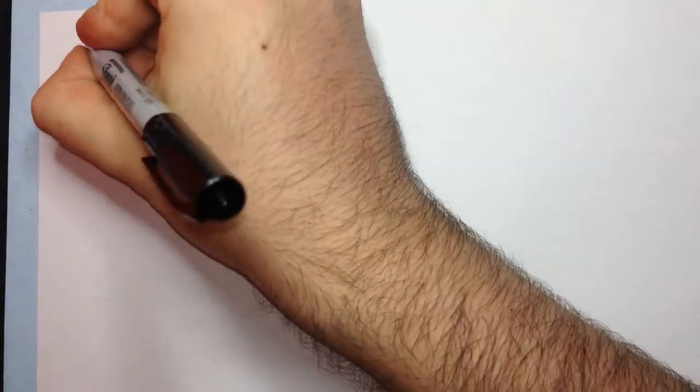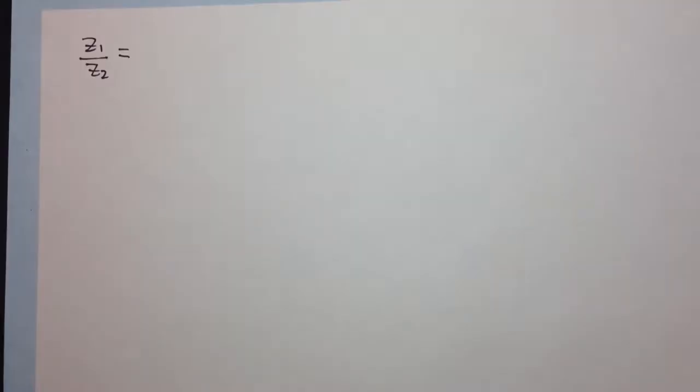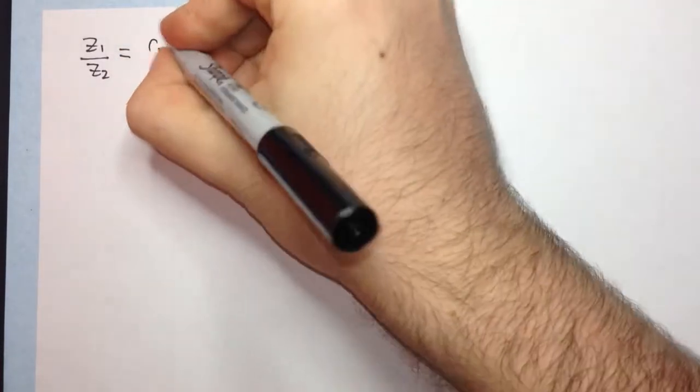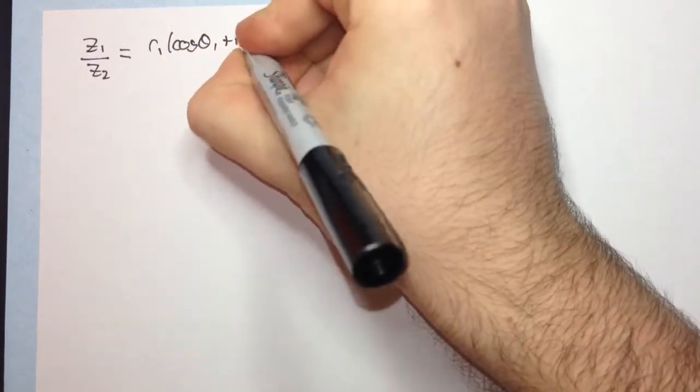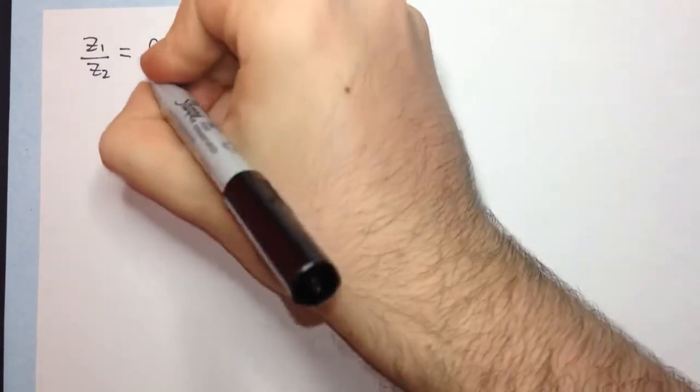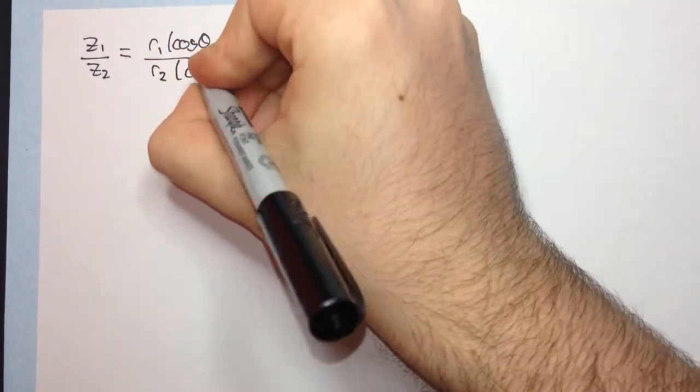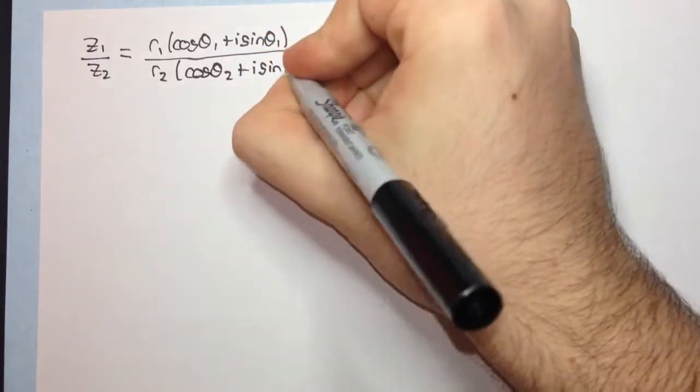Okay. Let's have a look at the second formula, which was the quotients. Okay. So we have a complex number z1 divided by z2. Alright. What's that equal to? z1 is r1 cos theta1 plus i sin theta1 divided by r2 cos theta2 plus i sin theta2.